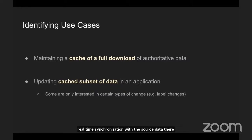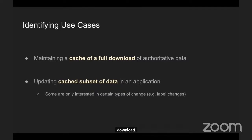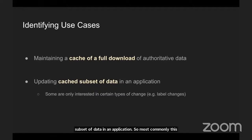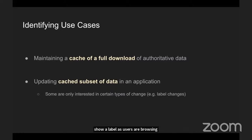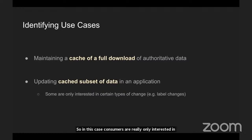There are other factors that can impact this, but it represents a significant improvement over regularly processing a full download. The other use case identified is caching a subset of data in an application — most commonly, caching a label, which is used to avoid having to retrieve data from the source just to show a label as users are browsing through your application. In this case, consumers are really only interested in the data they have chosen to cache and want to quickly locate that data in the change management feed.